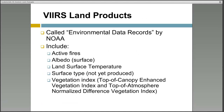There are a variety of land products produced in conjunction with NOAA. The most useful for land management are the active fires product, albedo, land surface temperature, and the vegetation index. The VIIRS Vegetation Index Environmental Data Record, or VI EDR, is a swath product generated every day at 375 meters spatial resolution over land. The VI EDR consists of two indices: the Normalized Difference Vegetation Index, or NDVI, derived from top-of-atmosphere reflectances, and the Enhanced Vegetation Index, or EVI, derived from atmospherically corrected top-of-canopy reflectances.